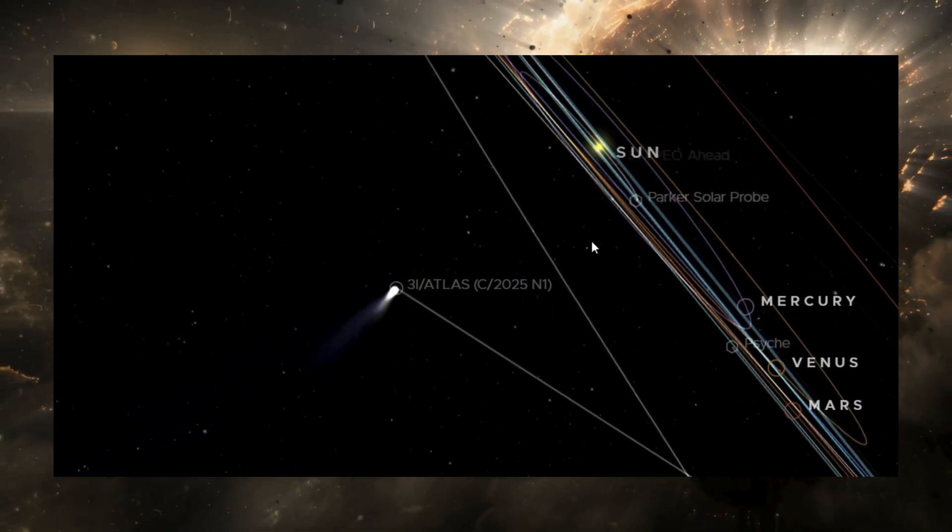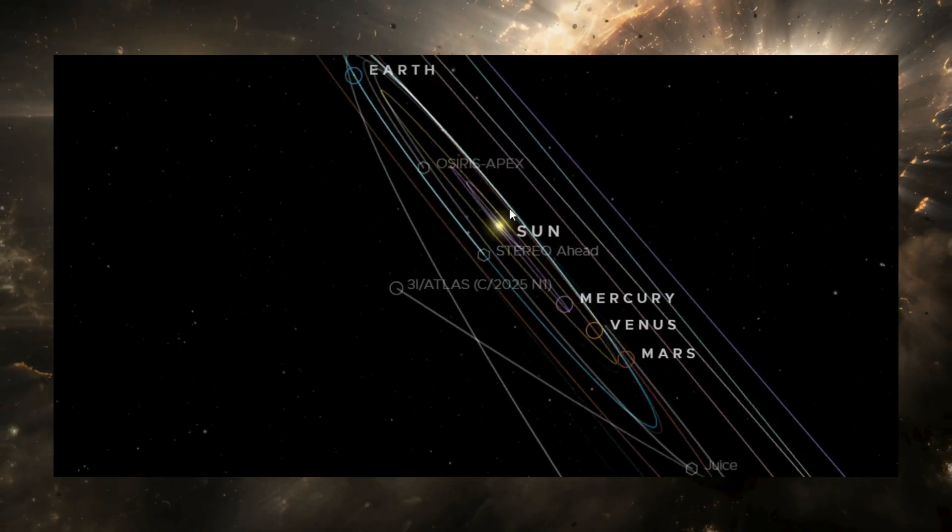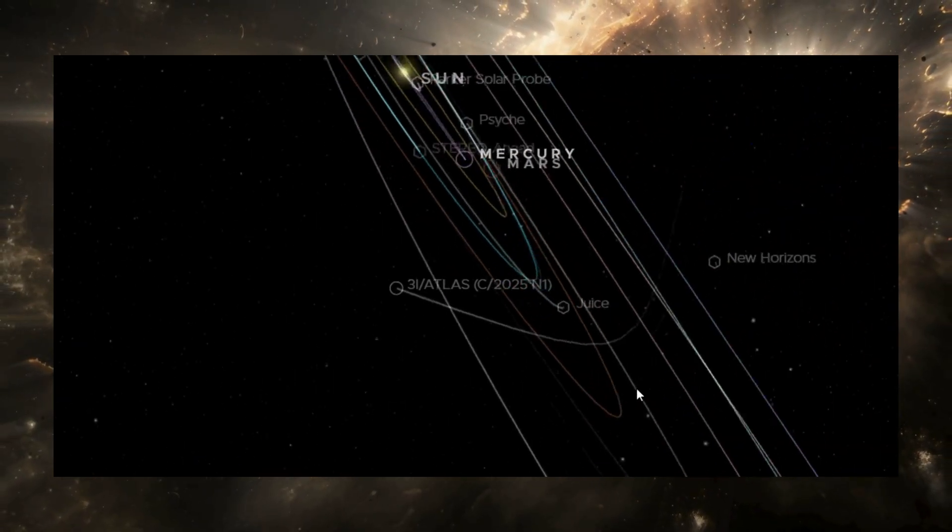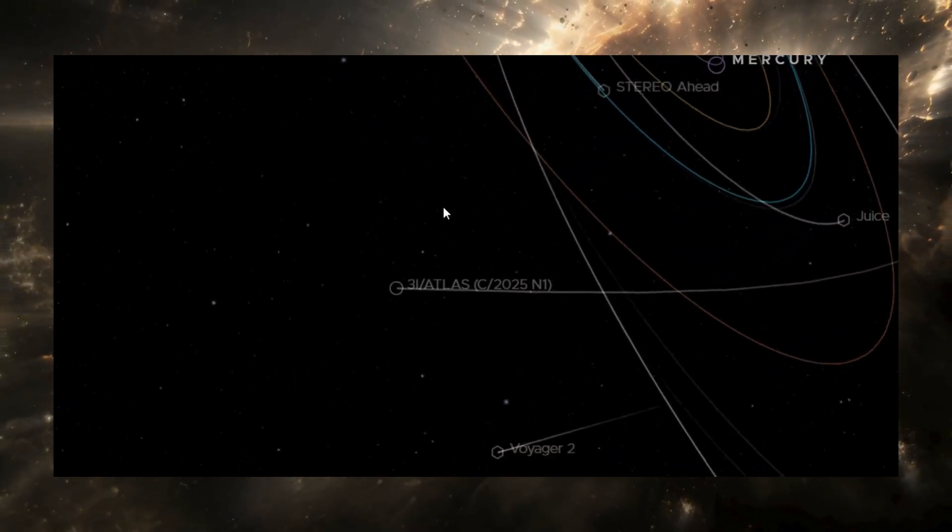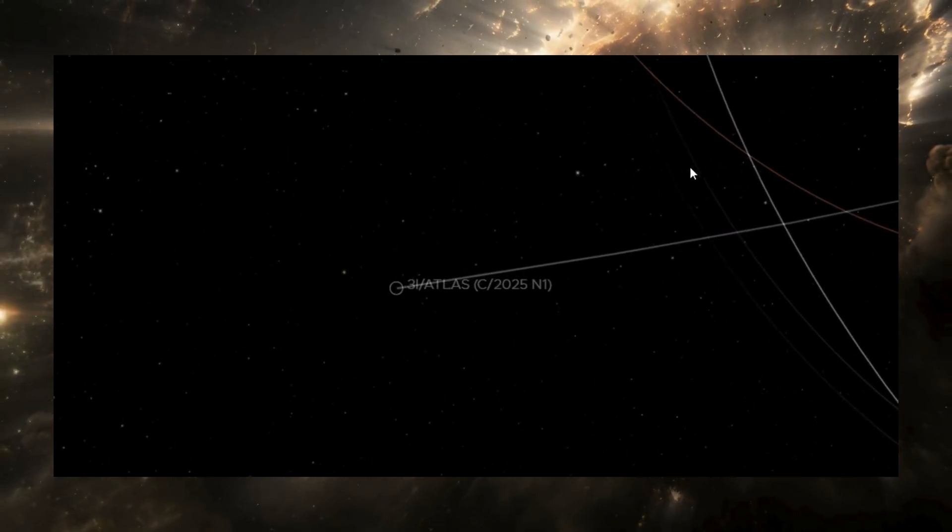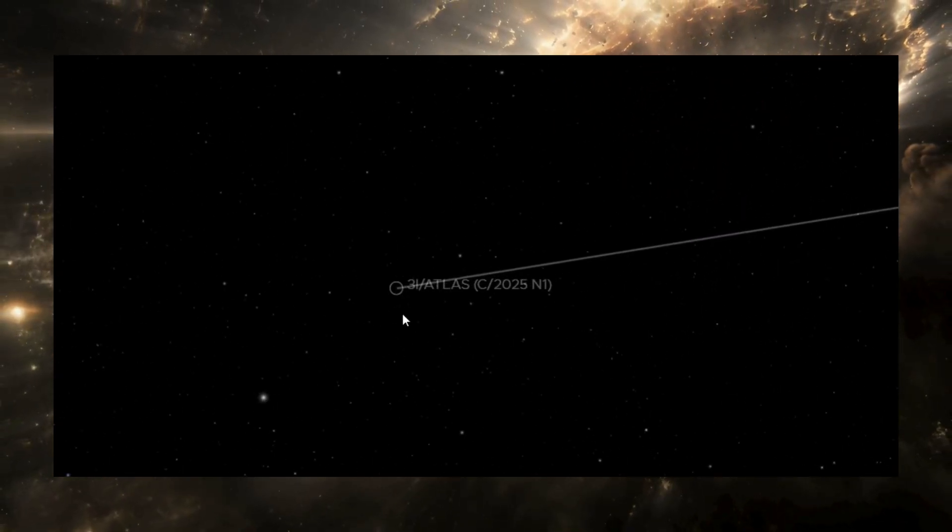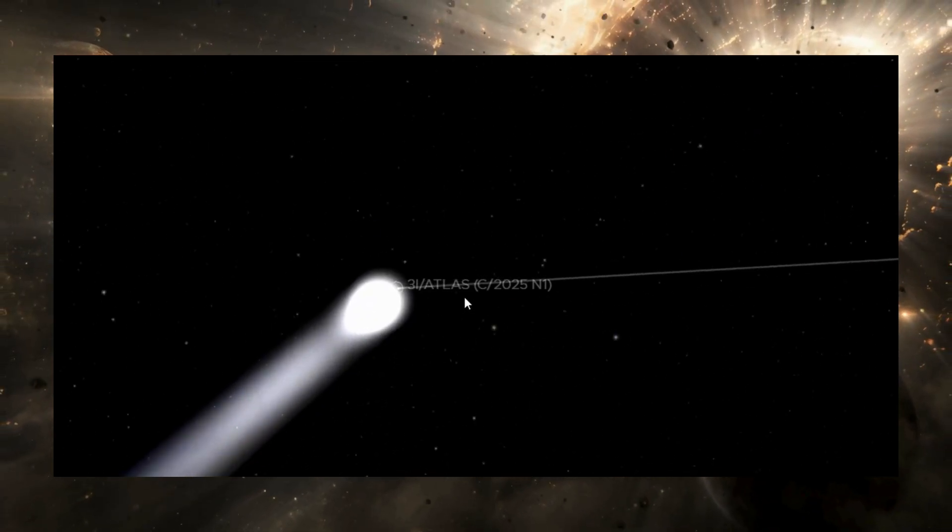So here's why this matters, no matter which explanation is correct. If this is just coincidence, then we've witnessed one of the most improbable orbital alignments in the history of astronomy. If this is natural comet behavior, then we're observing physics we've never seen before, something that could reshape our understanding of interstellar objects. If this is a calculation error,